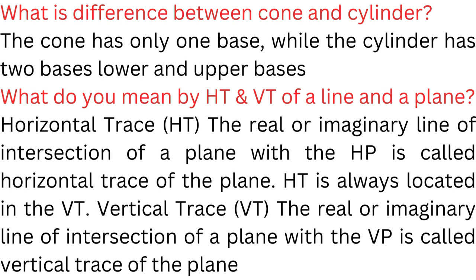What is the difference between cone and cylinder? The cone has only one base, while the cylinder has two bases — a lower base and an upper base.